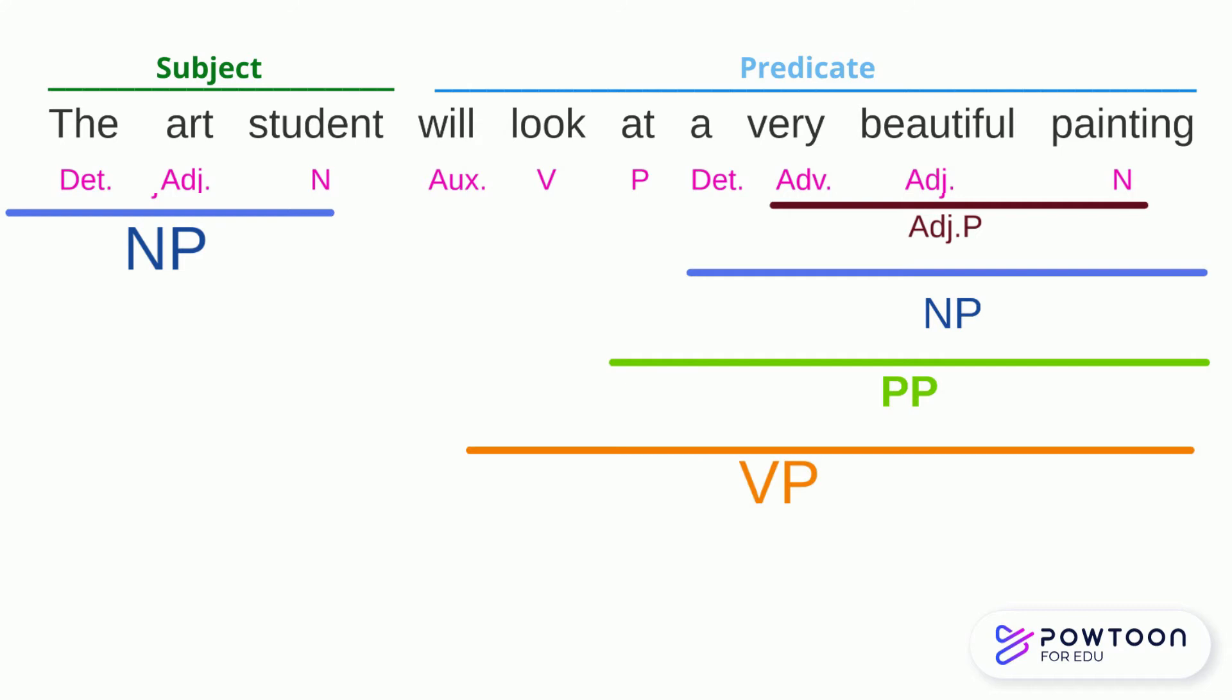Let's take a simple sentence and see how this sentence would be constructed. The art student will look at a very beautiful painting. The first thing we could do is to label each lexical item according to its word class.